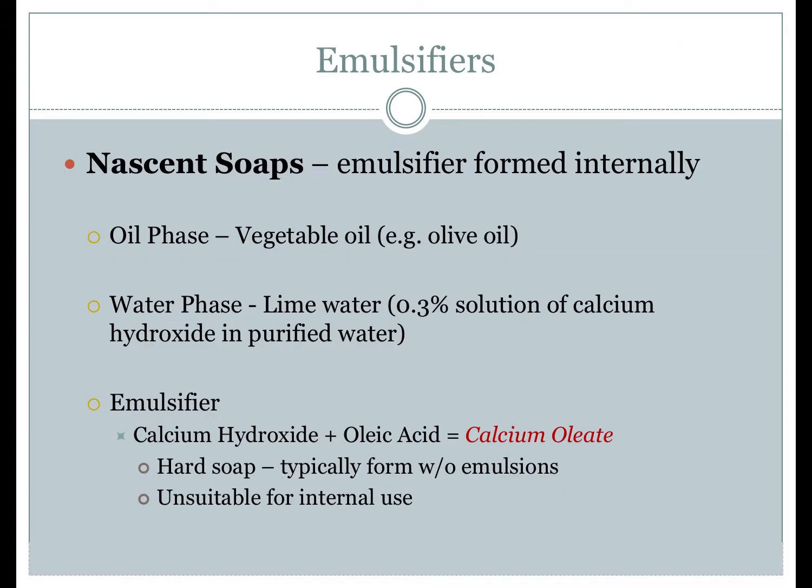The second type of emulsifiers are not added but rather created from a chemical reaction between the internal and external phases — these are called nascent emulsions. The term nascent means beginning to exist or develop. The emulsifier, in the form of a hard or soft soap, is formed during the compounding process. The prototype is the combination of olive oil with lime water. Olive oil is used because it has the largest amount of free fatty acid necessary for forming the soap emulsifying agent among vegetable oils.